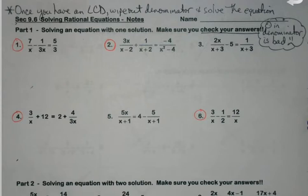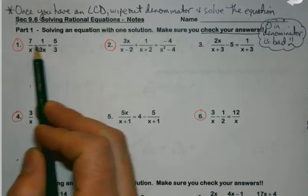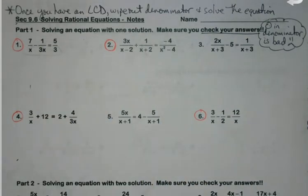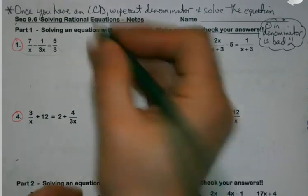Will it happen a lot? No. Will it happen enough that you really do need to take a second and check the answers and make sure that's not happening? Absolutely. So, first job on every one of these is to figure out what your common denominator is going to be. For number one, just looking at my denominators, what's my LCD going to be?